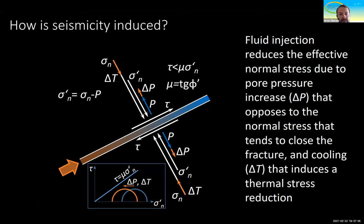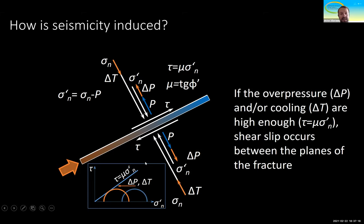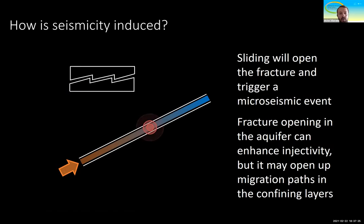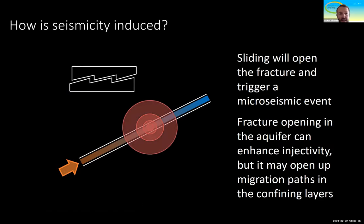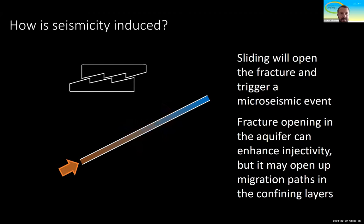Cooling reduces the total stresses. Both actions — overpressure and cooling — produce a reduction of the effective stress, so our Mohr circle is displaced towards failure conditions. If we keep injecting, eventually we may reach the failure surface, and in this case we would have a microseismic event.